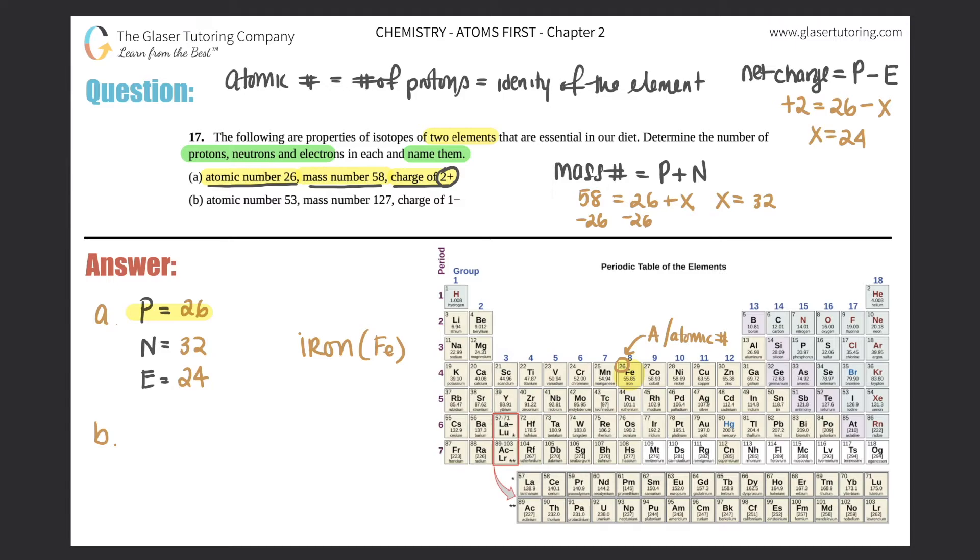So in this case, the element is iron, and you have 26 protons, 32 neutrons, and 24 electrons. Box that answer off, and box this off as well. That would be the answer for A. Now we just have to do the same thing for B.